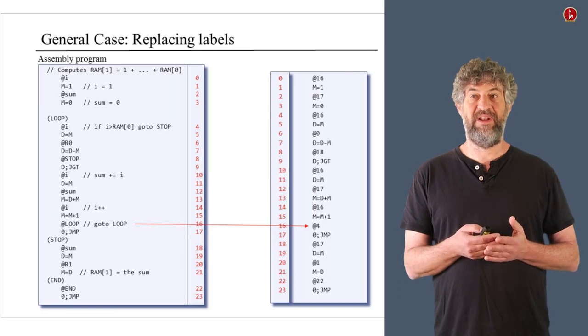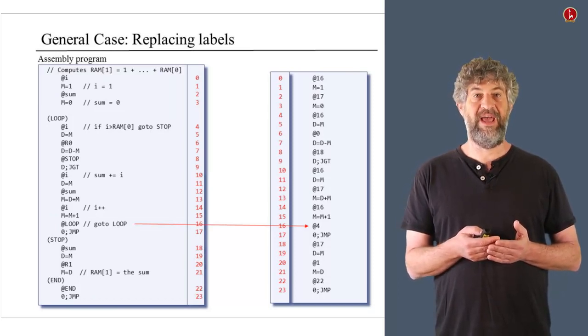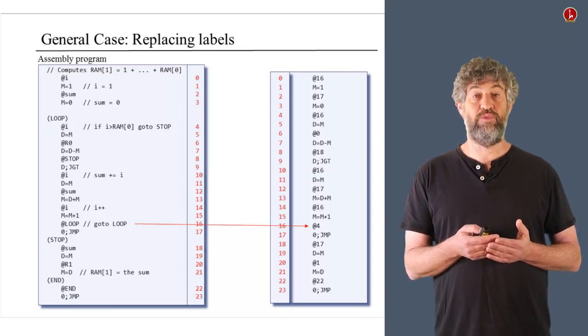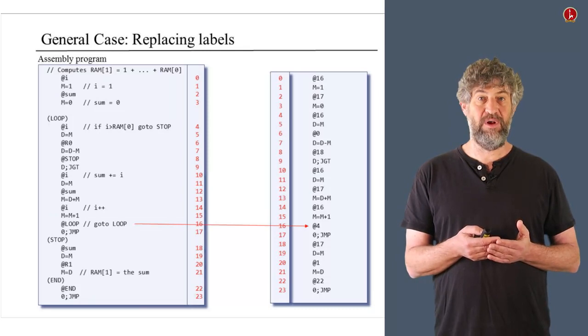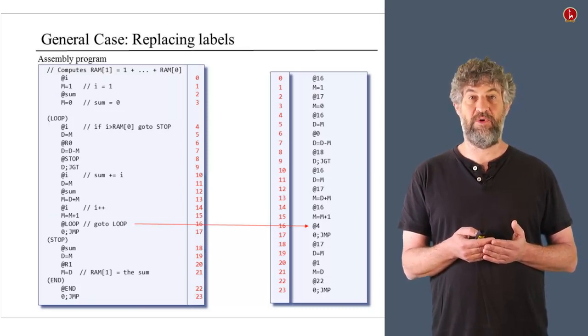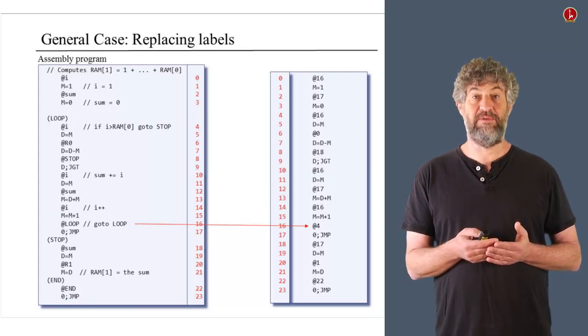So once we have that, whenever we see a declaration of the label loop, now we know what location it is. We need to remember it. And every time in the rest of the program that we refer to loop, we need to basically replace the symbol loop with the number, which indicates the address, which the next line after it is, in this case, address number four.